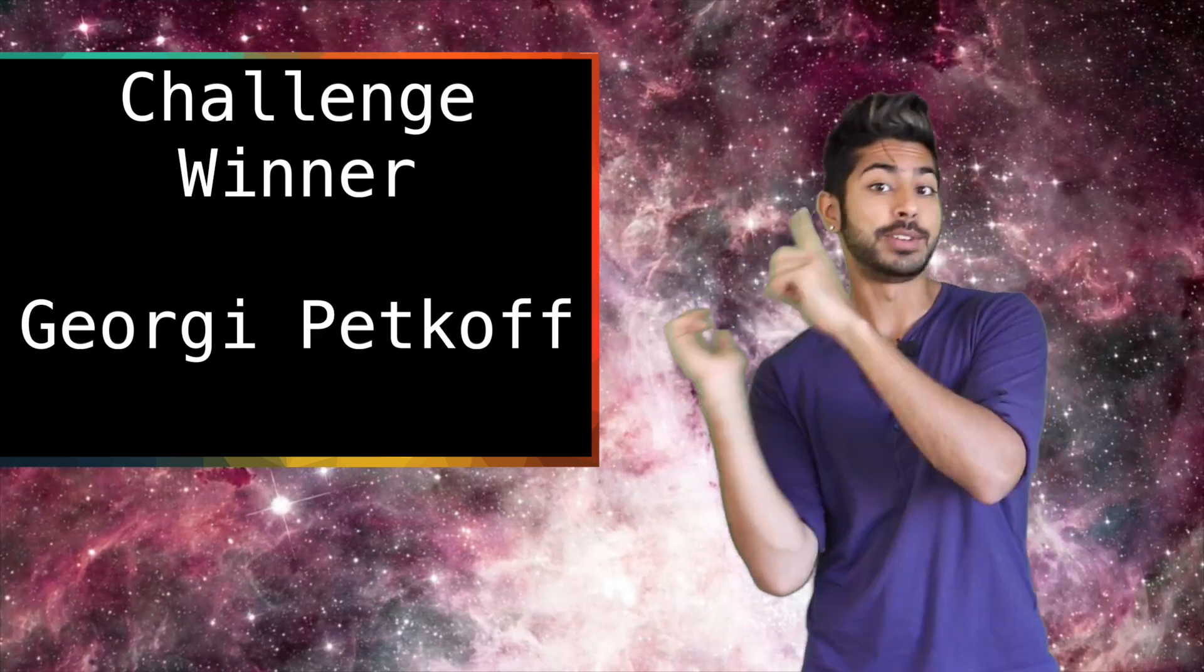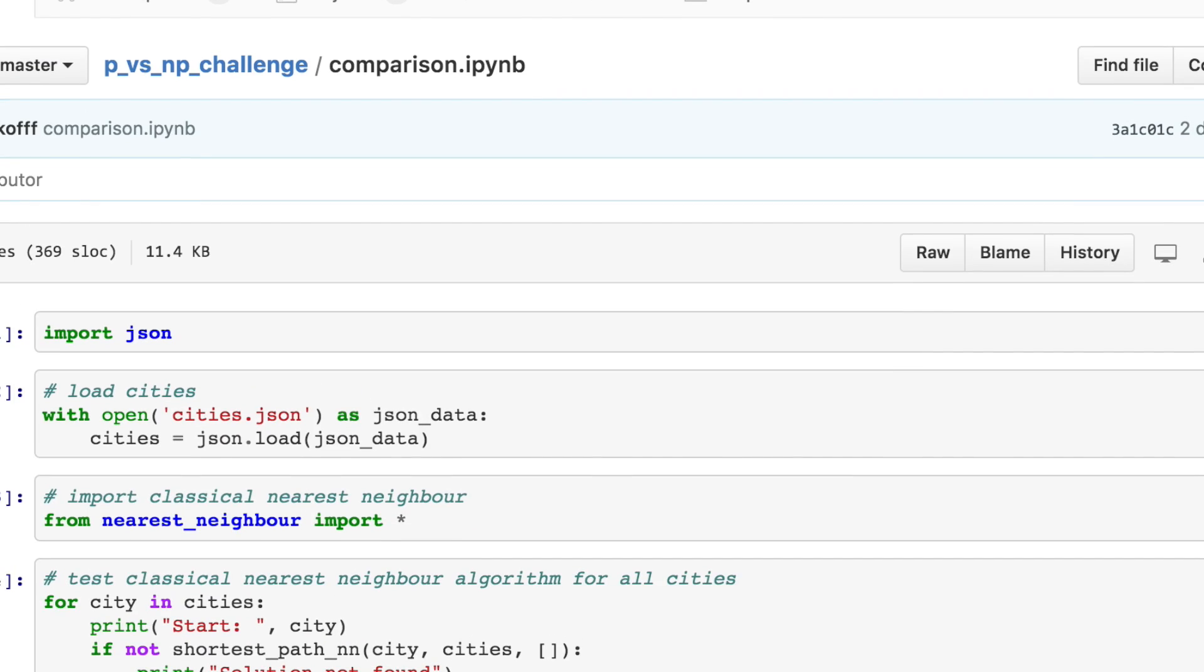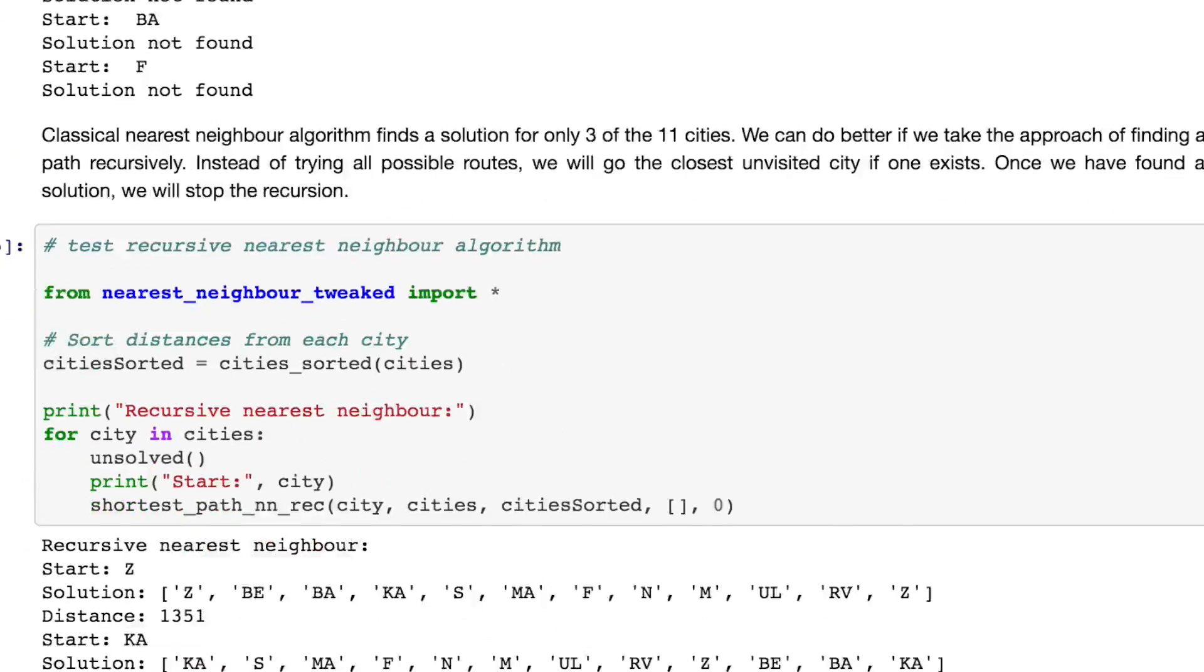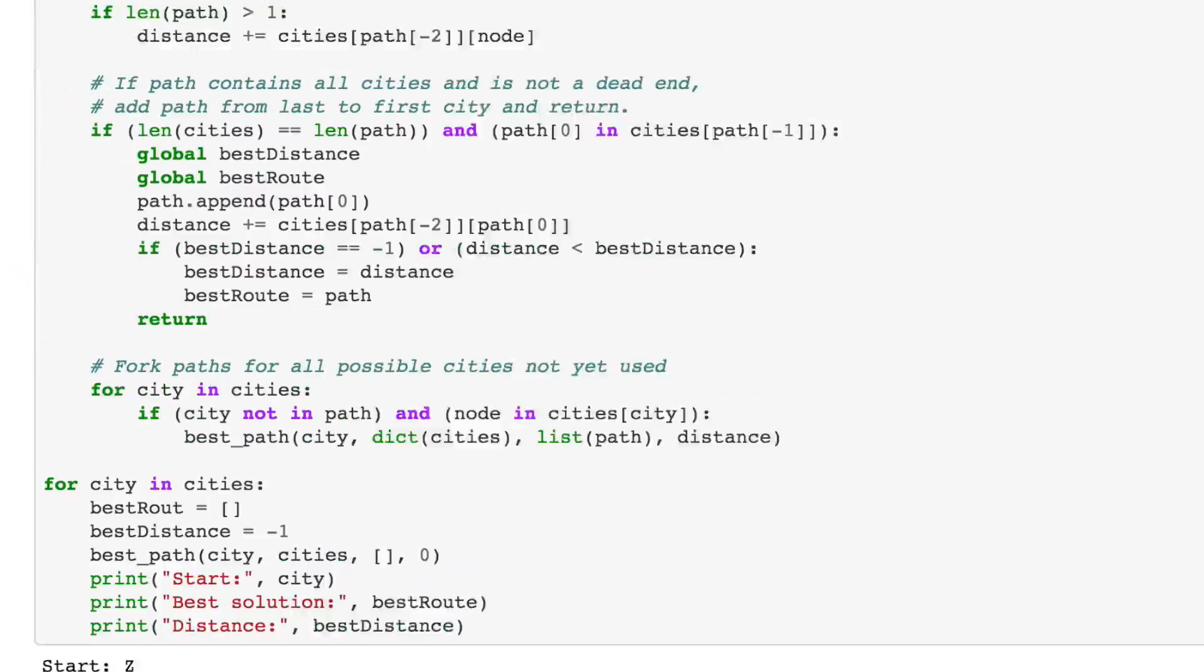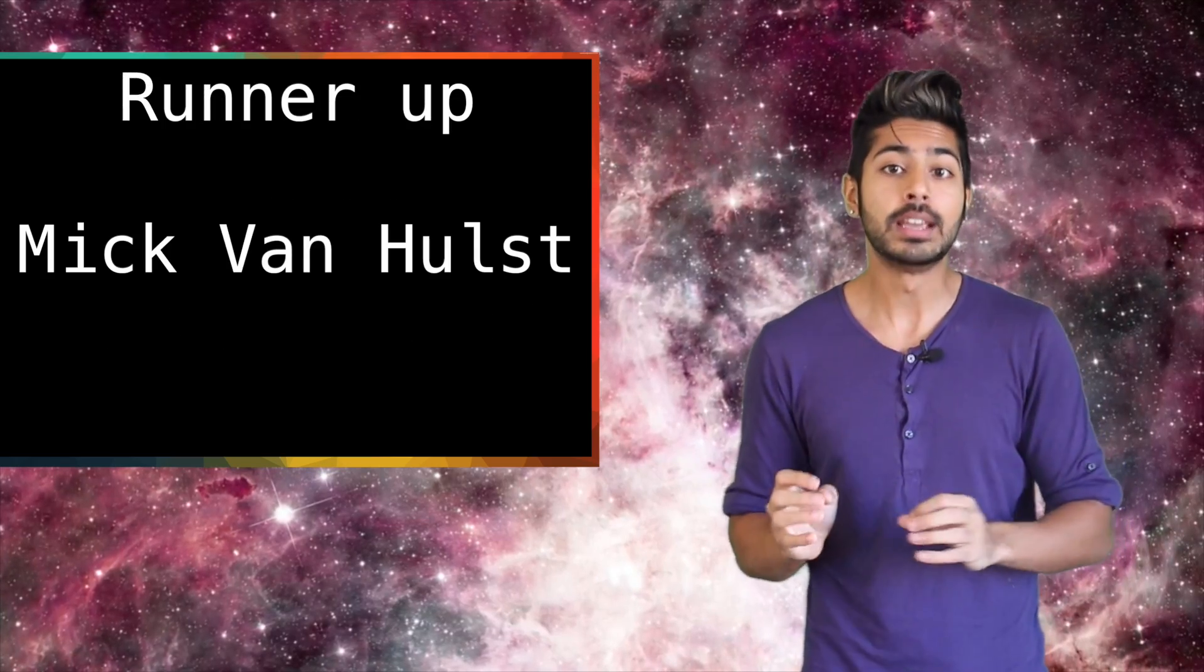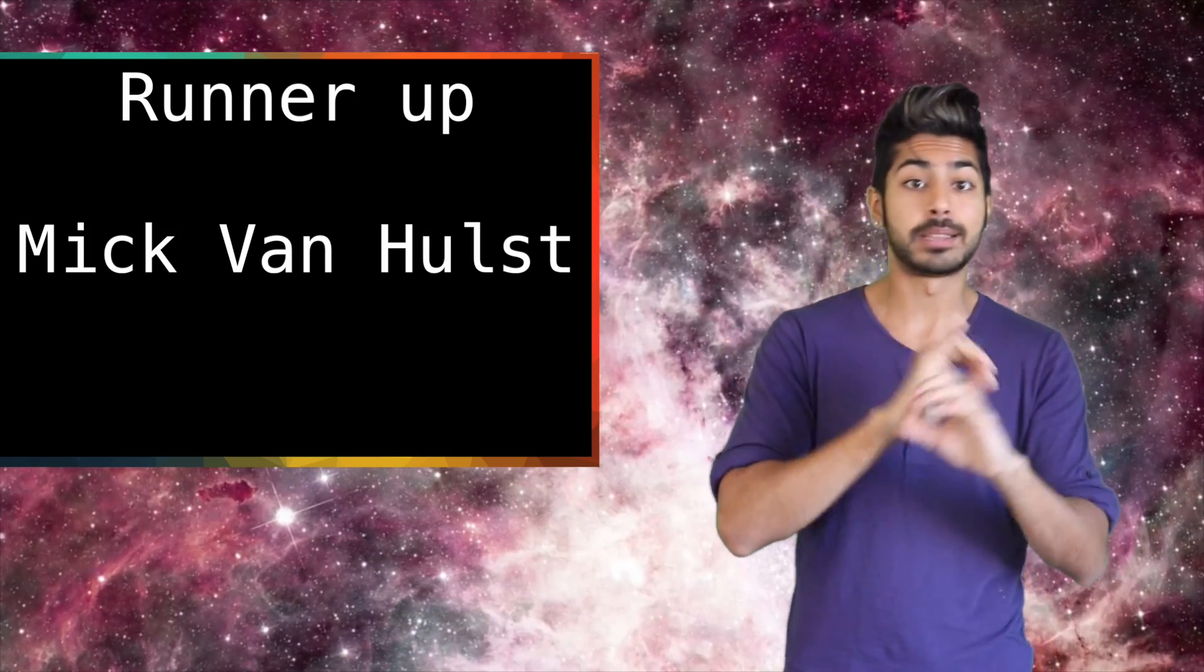The winner of the coding challenge from the last video is Georgi Petkoff. He implemented three different methods to estimate a solution to the traveling salesman problem and benchmark the results in an IPython notebook. Badass of the week. And the runner-up is Mick Van Holst. He used both the nearest neighbor and simulated annealing algorithm to estimate a solution.